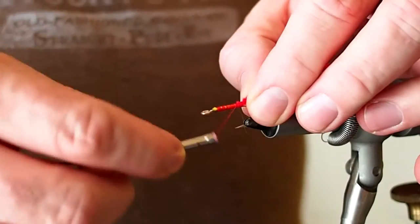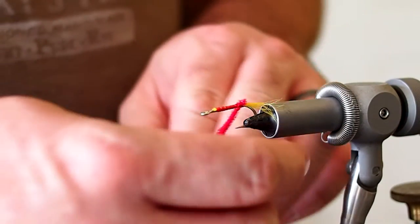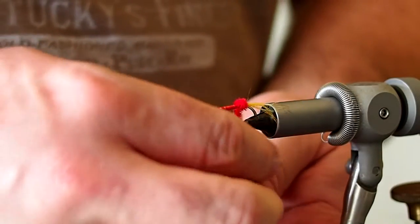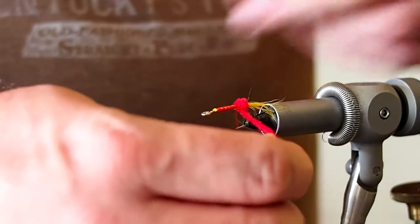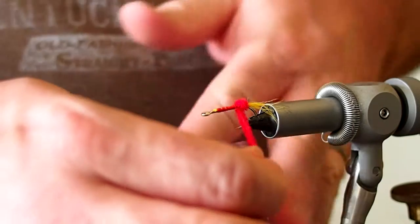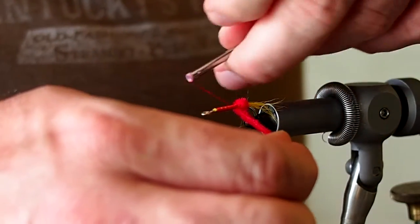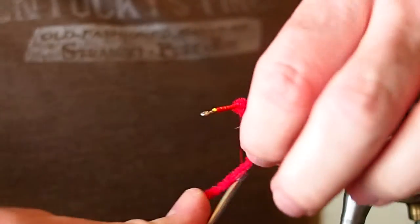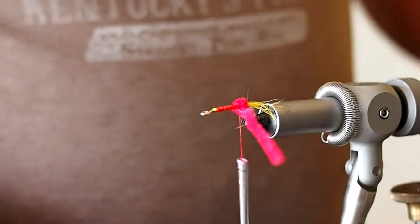Tie that in with some good firm wraps where the chenille does not spin on you. Just give a couple wraps of the chenille. And then capture with our thread. We'll snip away the excess.